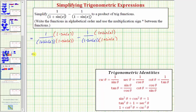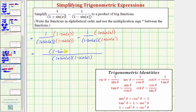So we can now subtract the fractions. The denominator is going to be the quantity one plus sine x times the quantity one minus sine x. The numerator is going to be one times the quantity one minus sine x, minus one times the quantity one plus sine x, or just minus the quantity one plus sine x.